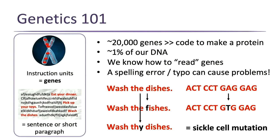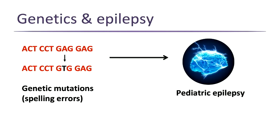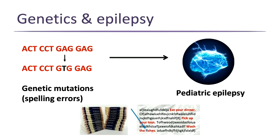Other single letter changes won't affect the protein and you won't have disease. It's these types of single letter changes we're looking for to understand the genetic basis of pediatric epilepsies. This is equivalent to sifting through a full set of encyclopedias to find the one change that turned 'dishes' to 'fishes' — so we need technology to do that efficiently.